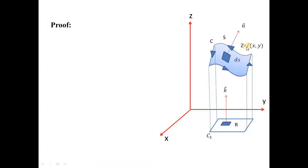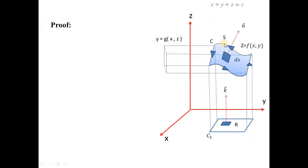Let the equation of this surface be z = f(x, y), since we have taken the projection on the XY plane. If we had taken the projection on the XZ plane, we would write y = g(x, z). The equation of the surface depends on which plane we project onto. For example, if the surface is x + y + z = C, this gives z = C − (x + y) for XY projection, or y = C − (x + z) for XZ projection.